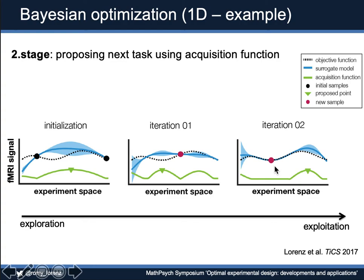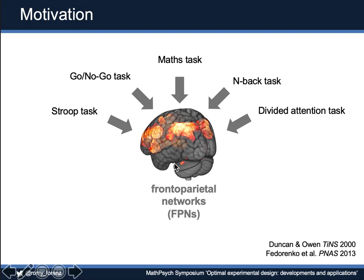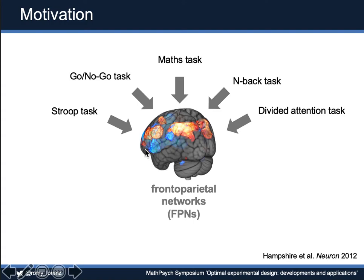Now I want to talk about how we can employ this technique in cognitive neuroscience research, and show how we can ask different questions we couldn't ask using conventional methodology. Starting with human brain mapping: this work was motivated by the fact that frontoparietal networks play a crucial role in cognition, but we don't yet understand exactly how different frontoparietal networks differ in their function. Exposing a subject to various cognitive tasks can lead to co-activation of these two networks, and sometimes in an unpredictable fashion, these networks dissociate.